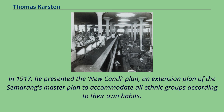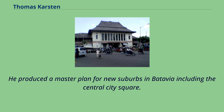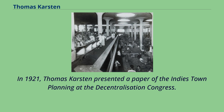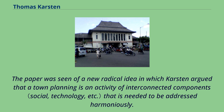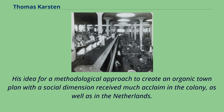In 1917, he presented the new Kandang Plan, an extension plan of Semarang's master plan to accommodate all ethnic groups according to their own habits. He produced a master plan for new suburbs in Batavia, including the central city square. In 1921, Thomas Carsten presented a paper on Indies town planning at the Decentralization Congress. The paper was seen as a radical new idea in which Carsten argued that town planning is an activity of interconnected components that needed to be addressed harmoniously. His idea for a methodological approach to create an organic town plan with a social dimension received much acclaim in the colony as well as in the Netherlands.